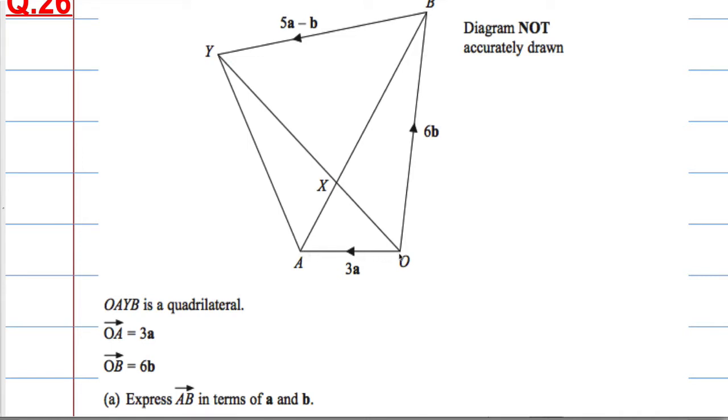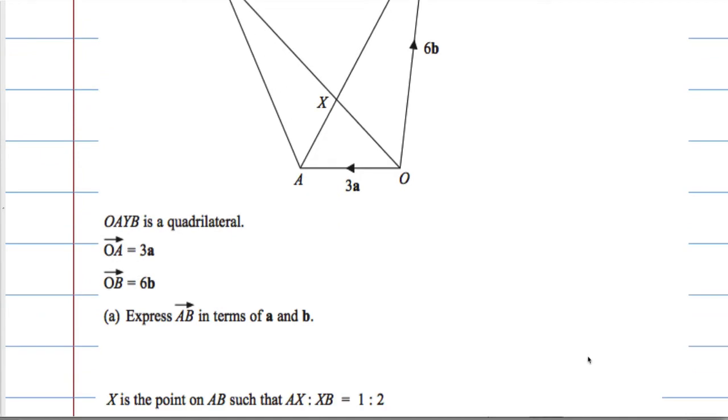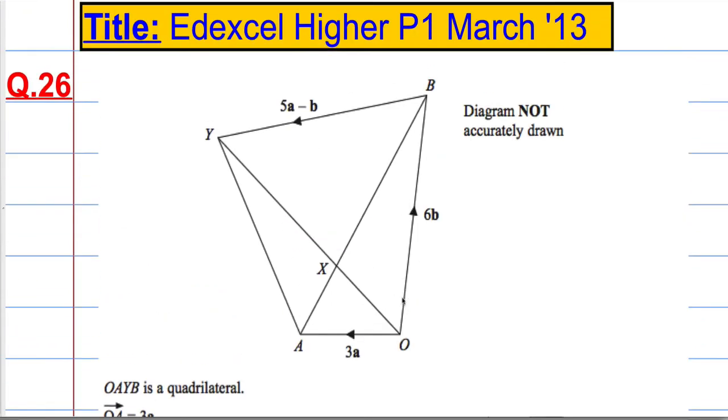If I start at A and I want to end up at O, I'm not going in the vector, I'm not traveling the vector 3a, I'm going in the opposite direction, so I need to travel minus 3a. So from A to O is minus 3a, and then I want to go up from O to B, which is 6b.